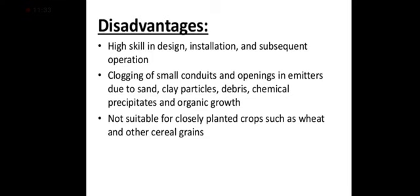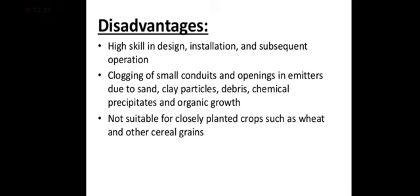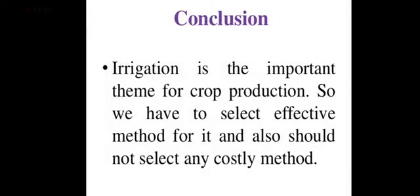Disadvantages of drip irrigation include high skill requirements in design, installation, and operation, and its installation cost is high. Clogging of conduits and emitter openings can occur due to sand, clay particles, debris, chemical precipitation, and organic growth — fine nozzles may clog. It is not suitable for closely planted crops such as wheat and other cereal grains, since the nozzles are placed at certain distances apart and cannot serve dense cropping patterns.